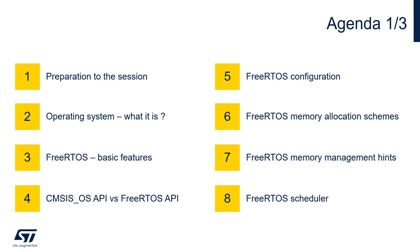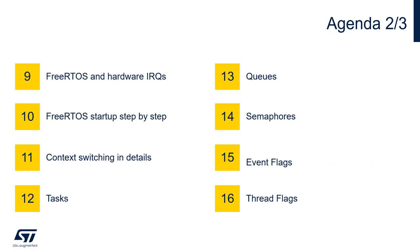The next point will be an integration of FreeRTOS with STM32CubeMX and STM32CubeIDE and its basic configuration. Further, we'll discuss different memory allocation schemes available in FreeRTOS. After this, we'll present the scheduler and its main features. Our next point will be the discussion about FreeRTOS and its connection to the hardware — the STM32 device in our case. Another point covers the FreeRTOS startup process step-by-step, followed by a detailed discussion on context switching.